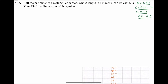Hello everybody, welcome to Visual Learning Portal where visuality conveys best. Today we are going to do NCERT Class 10 Chapter 3, Exercise 3.2, Question Number 5. Let's read the question: half the perimeter of a rectangular garden whose length is 4 meters more than its width is 36 meters. Find the dimensions of the garden — that means we have to find the length and width.